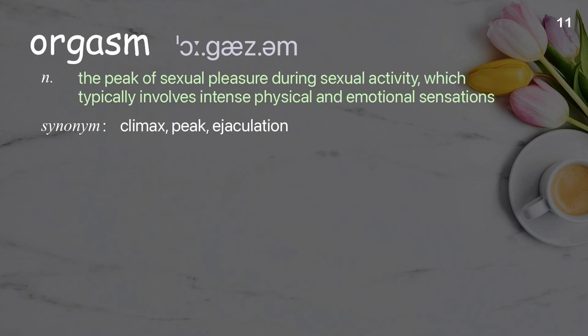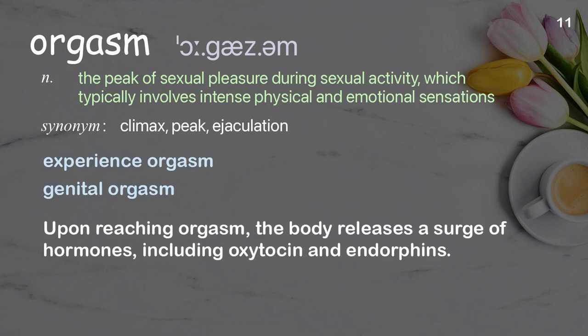Orgasm: the peak of sexual pleasure during sexual activity, which typically involves intense physical and emotional sensations. Examples: Experience orgasm. Genital orgasm. Upon reaching orgasm, the body releases a surge of hormones, including oxytocin and endorphins.